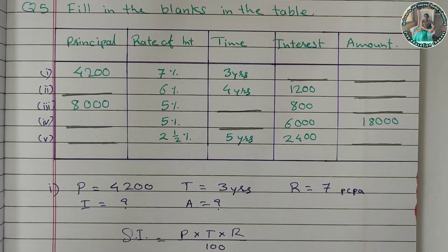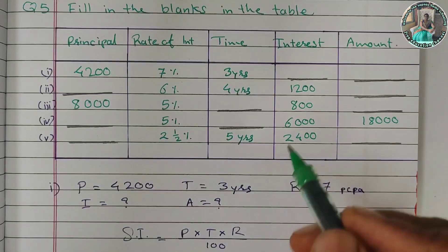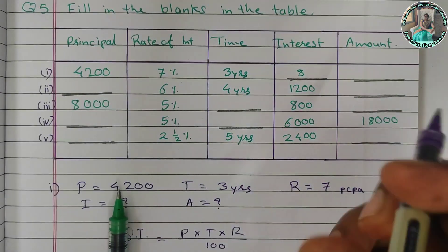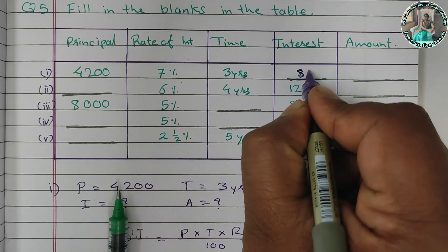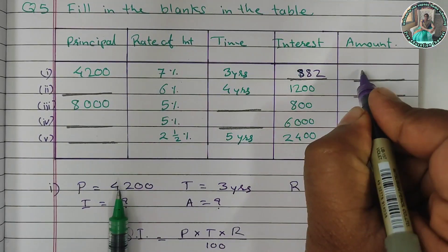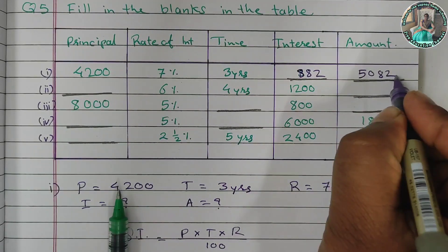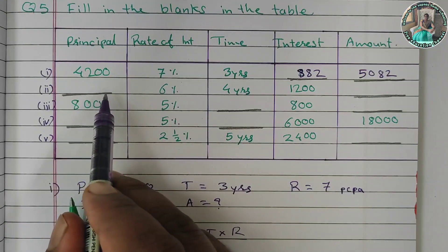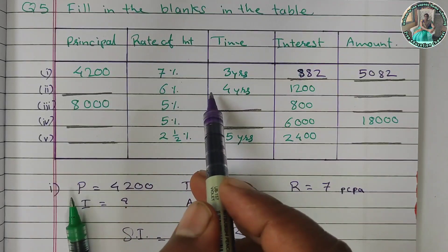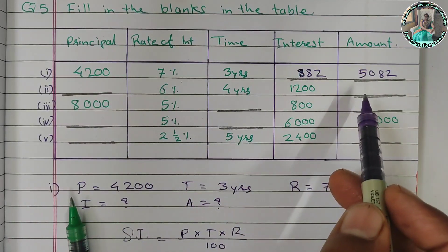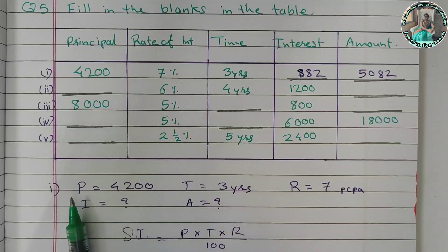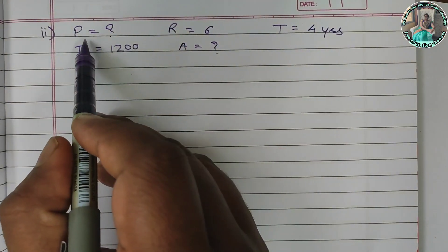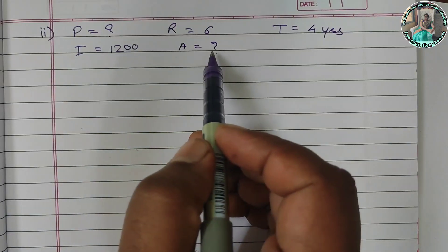Now for the next row in the table: the principal amount is missing, the rate of interest is 6%, the time is 4 years, the interest is 1,200, and the total amount is missing. We will find out the principal amount and the total amount.